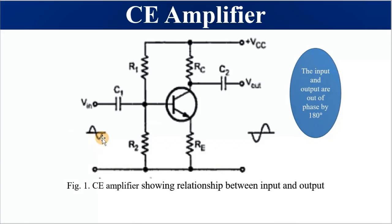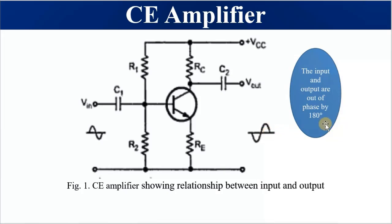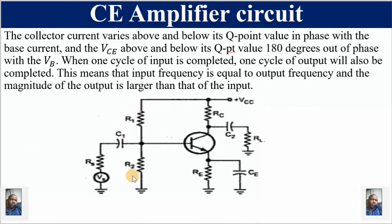Looking at the input and output: as you can see the output is greater than the input — hence the transistor is acting as an amplifier — but the two are out of phase by 180 degrees. As the input signal goes up, the output goes down; as the input signal goes down, the output goes up — hence the 180 degree phase shift. Please take note of this relationship. The input is a sinusoidal signal, the output is a sinusoidal signal, and the frequency is the same.